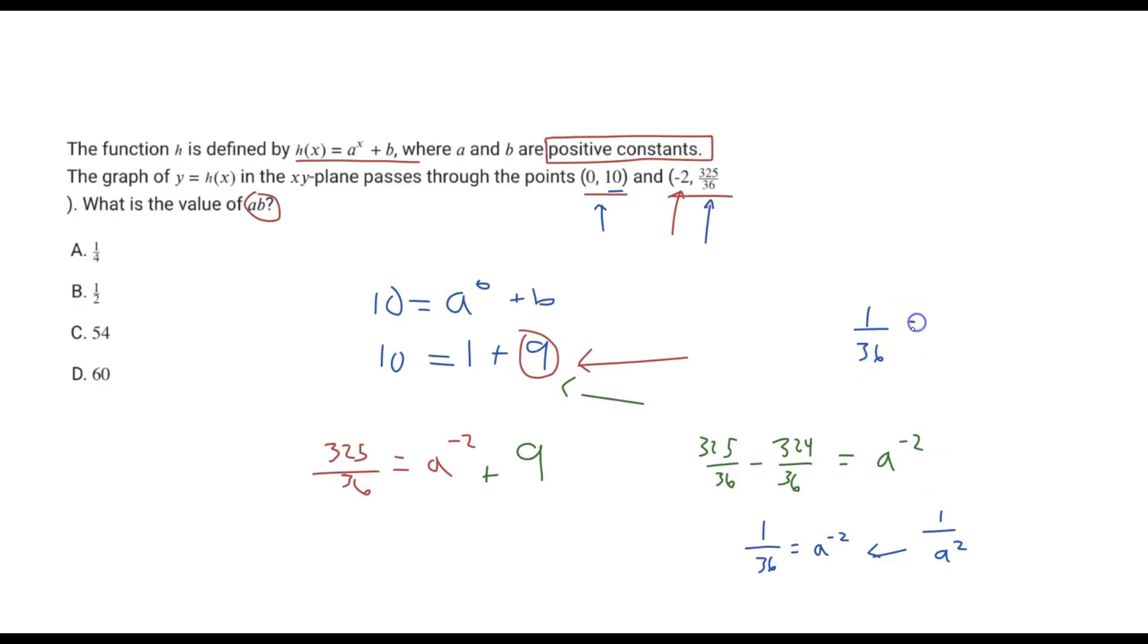Because we have 1/36 equals 1/a^2, what we can do here is just disregard everything on top because we can take the reciprocal of both sides. So this in reality really is just 36 equivalent to a squared.